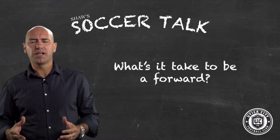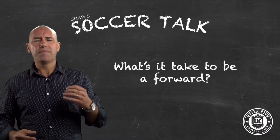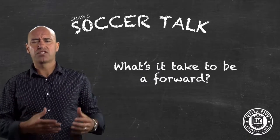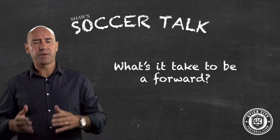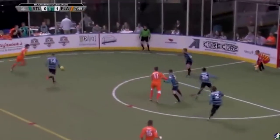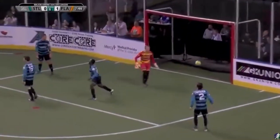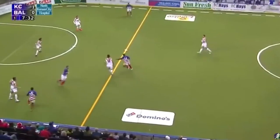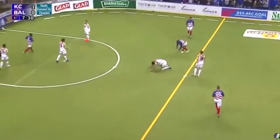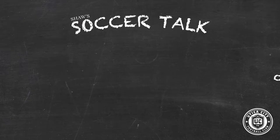When it comes to attacking players, there are many different attributes that can make a player successful, especially in the MASL. Make no mistake, one thing that they all have in common is that they are able to find the back of the net and score goals. But in the MASL, you will predominantly find two types of forwards that are utilised in order to be successful.